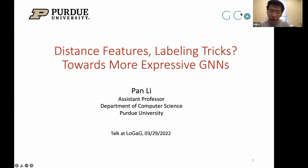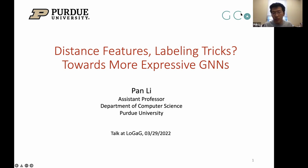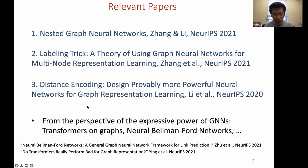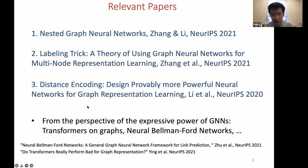Today I'd like to introduce how to use distance features and labeling tricks to improve the expressive power of graph neural networks. This is a line of research covering several closely related papers. I will mostly focus on the theoretical insights and connections between three papers: nested graph neural networks, labeling tricks, and distance encoding. I may also briefly discuss other relevant works such as transformers on graphs and Neural Bellman-Ford networks.